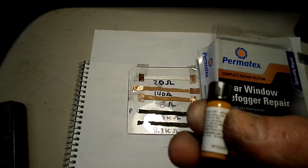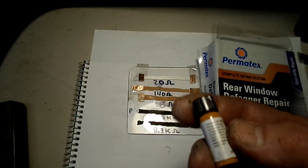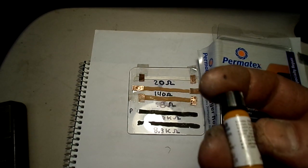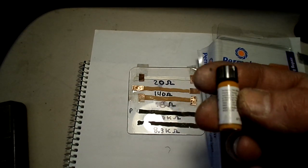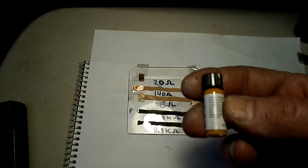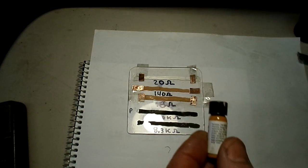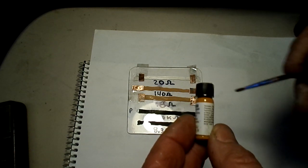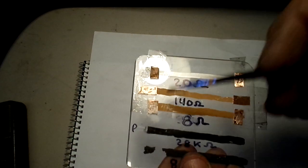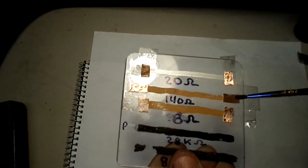They recommend that you put three applications of it across your heater grid where it's broken. If it'll handle that much current, it might be a good thing to use. So I painted some of it onto this plexiglass here. They recommend three brush strokes.